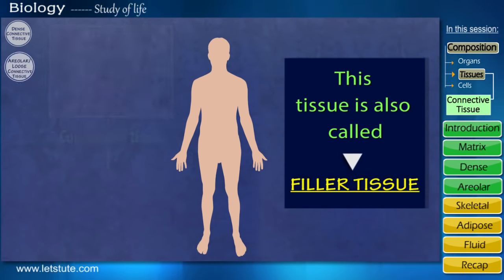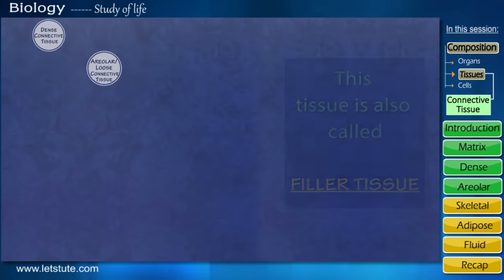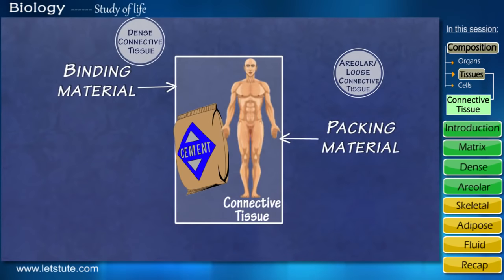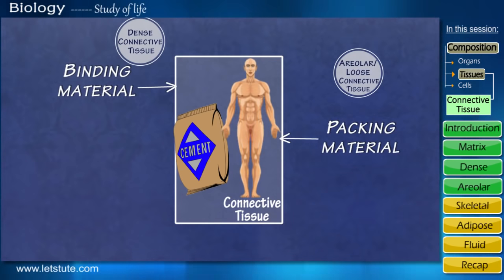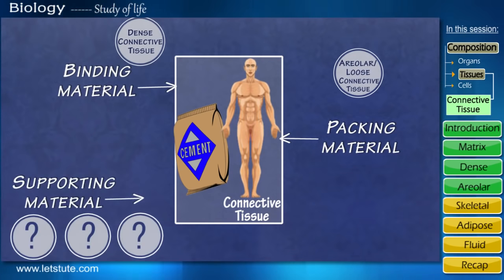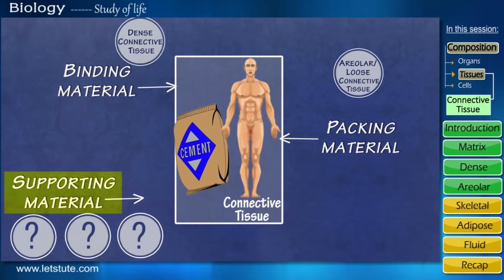So mainly this type of connective tissue is used as a filler tissue. So far we've seen how connective tissue connects and binds parts of our body. Now let's move a step ahead and see the other functions — how the connective tissue supports our body.